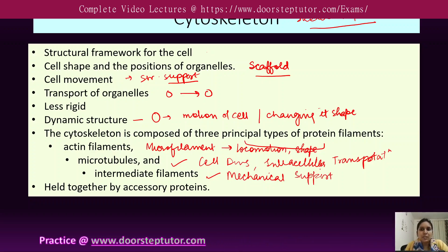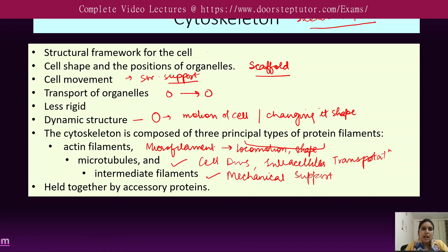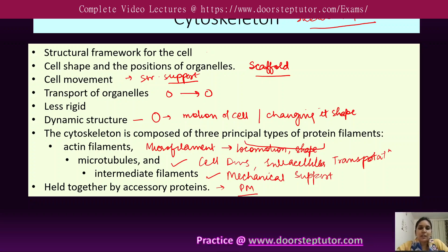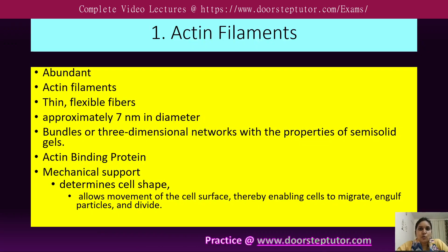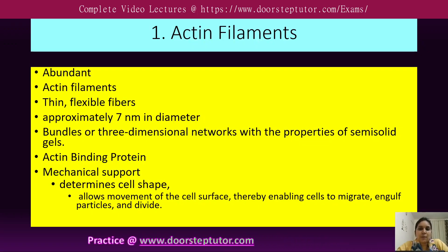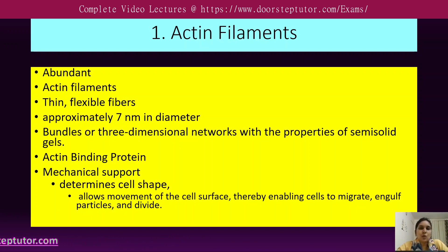The intermediate filament provides mechanical support to the cell. These three principal protein filaments make up the cytoskeleton structure and are held together with the help of accessory proteins, either with each other or attached to the plasma membrane. Now we will discuss the actin filament, the first principal protein of the cytoskeleton.